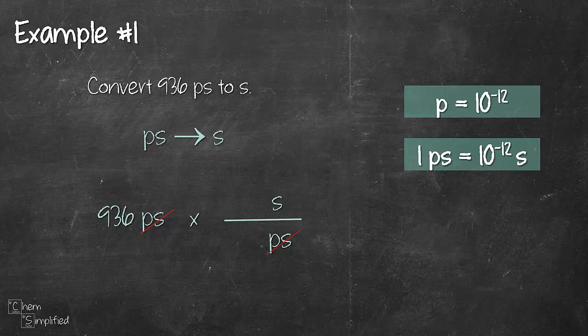And then after that we place in the values. From our conversion factor we have 1 in front of picosecond, 10 to the negative 12 in front of s. So we do the math: 936 times 10 to the power of negative 12 divided by 1. That will give us 9.36 times 10 to the power of negative 10 seconds.